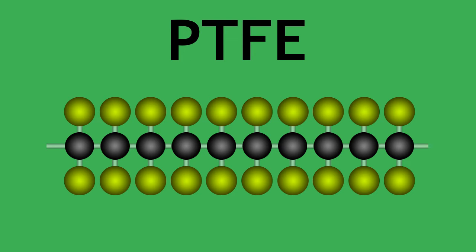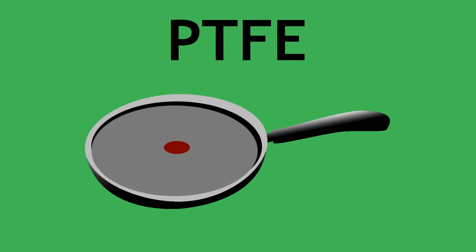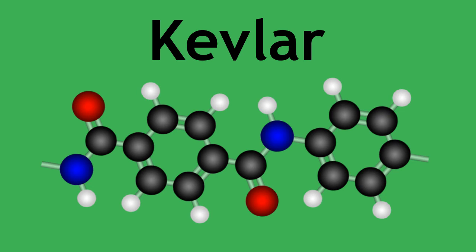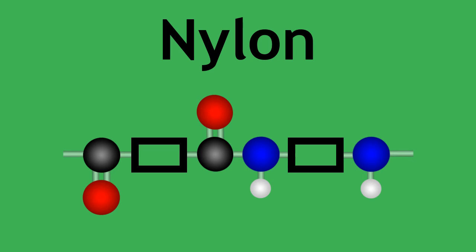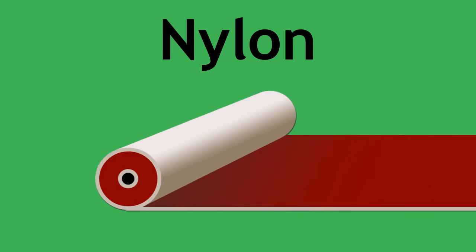Poly-1122 tetrafluoroethene, also known as PTFE, is a non-stick coating on frying pans, as well as being used in bearings and other low-friction surfaces. Kevlar is a unique polymer in that it forms bulletproof vests and jackets. Nylon is used in textiles, clothing and carpets.